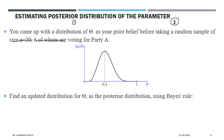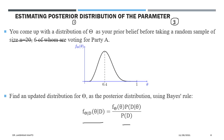Once you have the prior distribution, you can proceed to find the updated — posterior — distribution of theta using Bayes rule. The posterior distribution is obtained by multiplying the prior distribution by the likelihood of the data given theta, divided by the probability of the data. If the prior is good, the posterior will be better, and from it you can estimate theta.